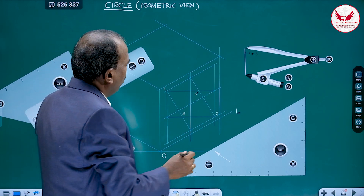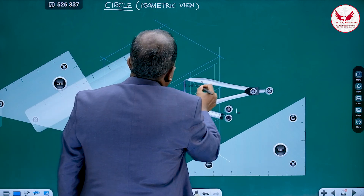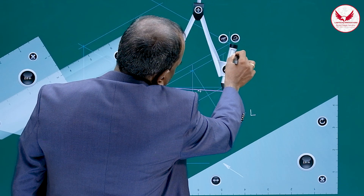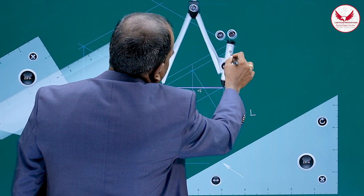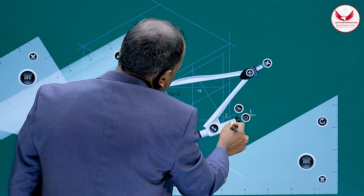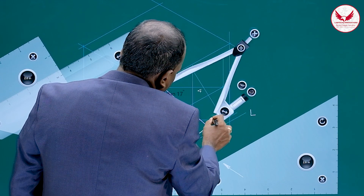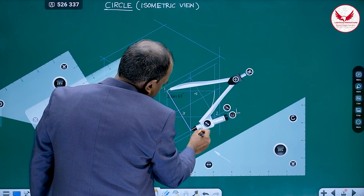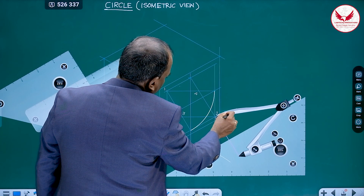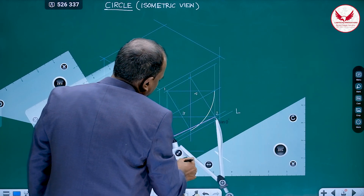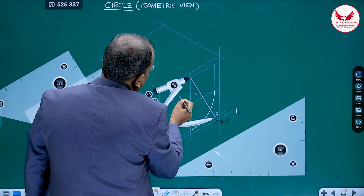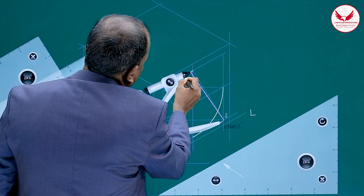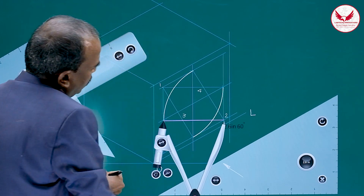With these four centers and the compass we can draw the proper ellipse. Place the compass at center 1, increase the radius to reach the midpoint of the opposite side, and verify it also matches the other midpoint. Draw that quarter-circular arc. Then shift the compass to center 2 with the same radius and draw the quarter circle on that side, confirming it matches both midpoints.